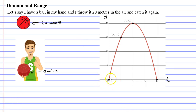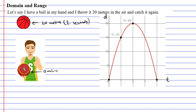When we look at the origin we can see that when time was 0, the ball is 0 meters above my hand. Then after 2 seconds the ball was 20 meters above my hand — it only took 2 seconds to reach its highest point. And then after 4 seconds the ball is once again 0 meters above my hand, so it took 4 seconds to catch the ball.